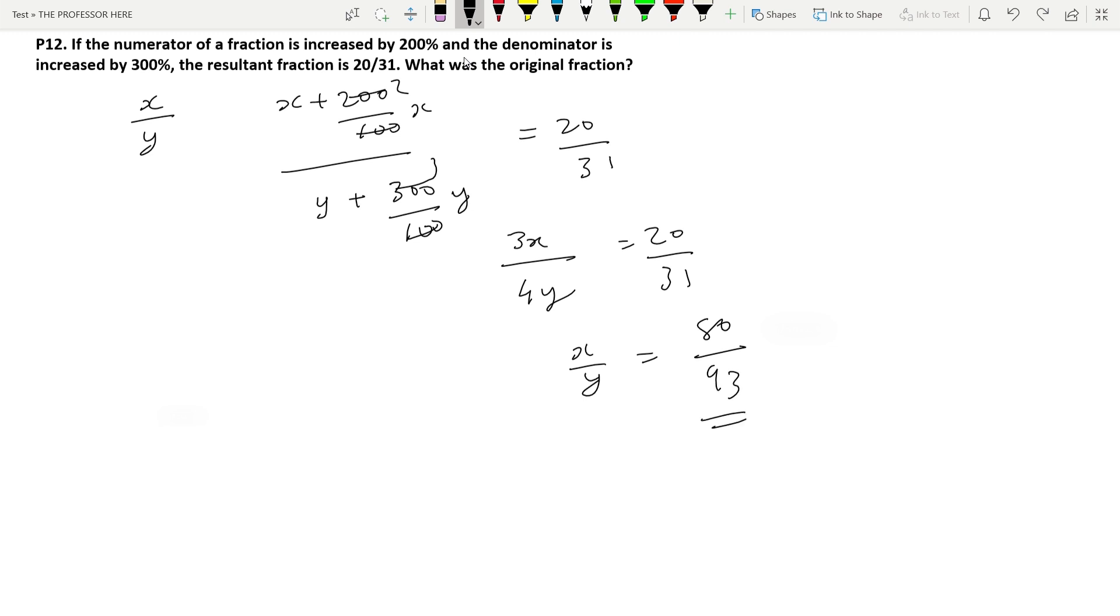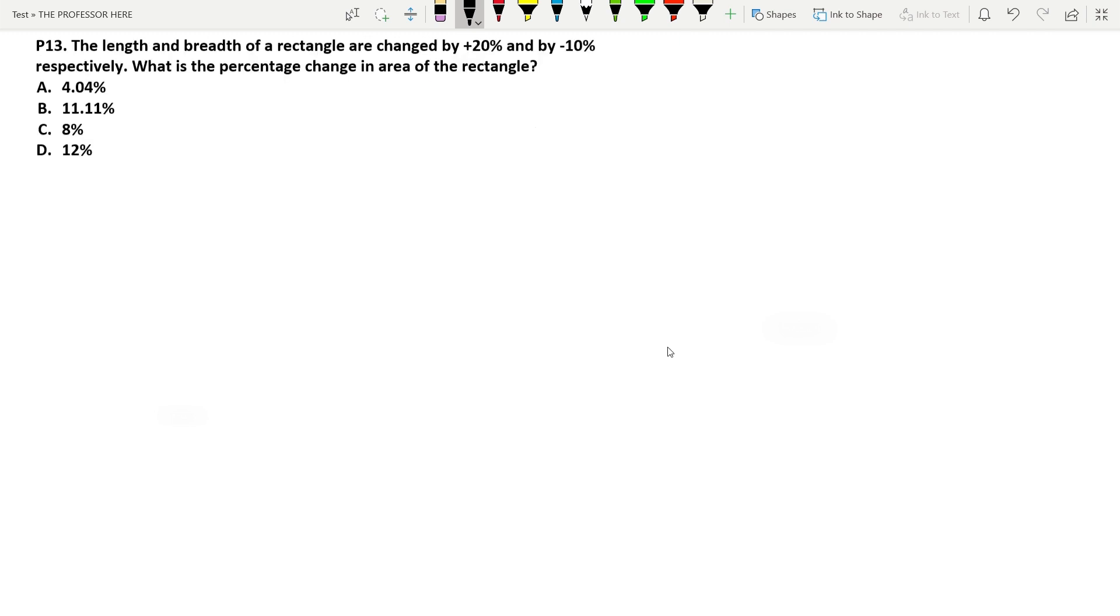So our original fraction x by y is equal to 80 by 93. Question number P13: The length and breadth of a rectangle are changed by 20 percentage and minus 10 percentage respectively. So let the initial length and breadth be l and b. The length is increased by 20 percentage, so the initial value was l. It is increased by 20 percentage which means l is increased by 20 percentage of l: 120 l divided by 100 which is 1.2 l. Same goes for b and you will get it as 0.9 b. There is a decrease of 10 percentage.